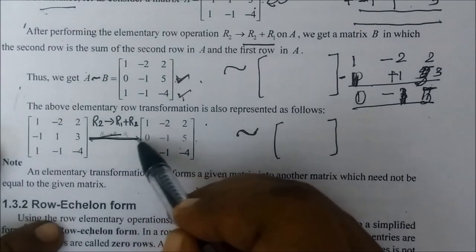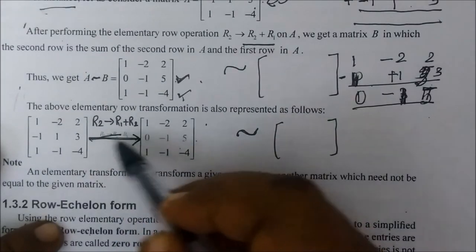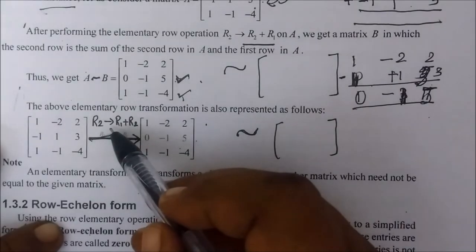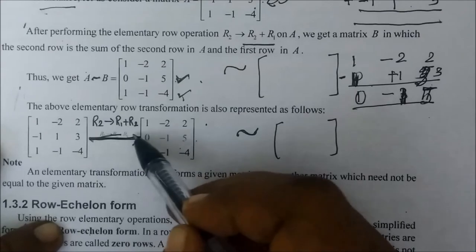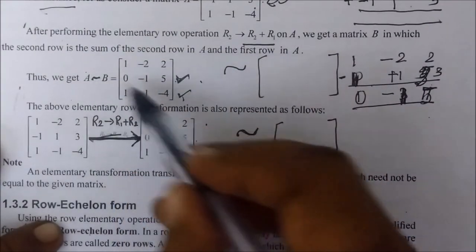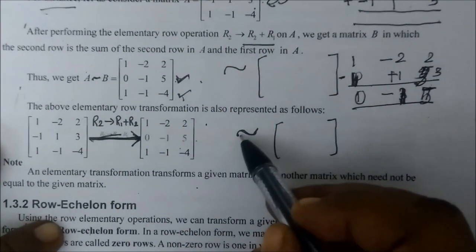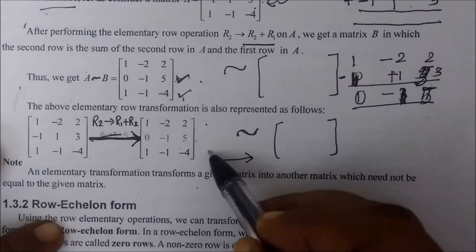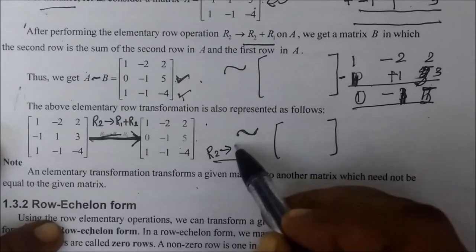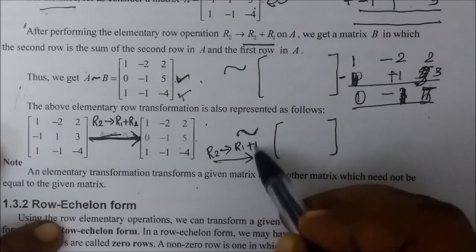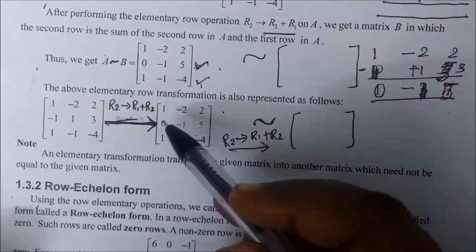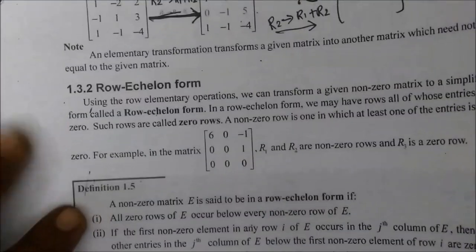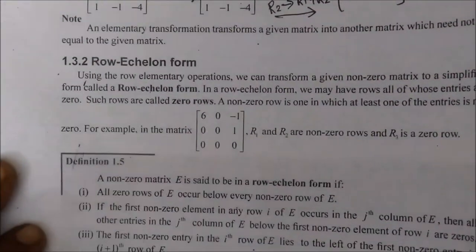We can apply changes to the matrix and continue from there. You can follow any one approach. We will see the row echelon form in our next video. Thank you.